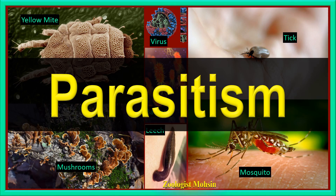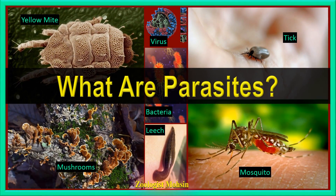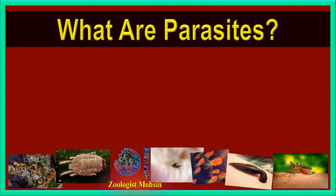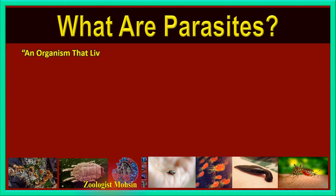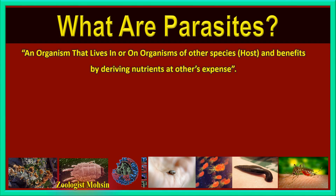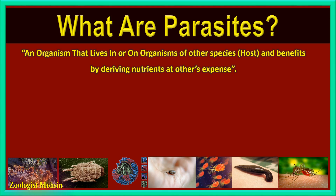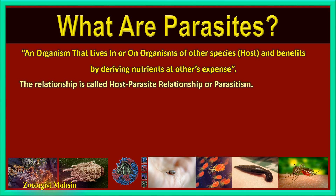Before going into the depth of parasitism, let's understand what parasites actually are. Most biologists think that parasites are organisms that live in or on organisms of another species, called the host, and benefit by deriving nutrients at the host's expense, causing diseases in some cases. The words 'in or on' define the types of parasites, and benefits are taken only by the parasite and not by the host.